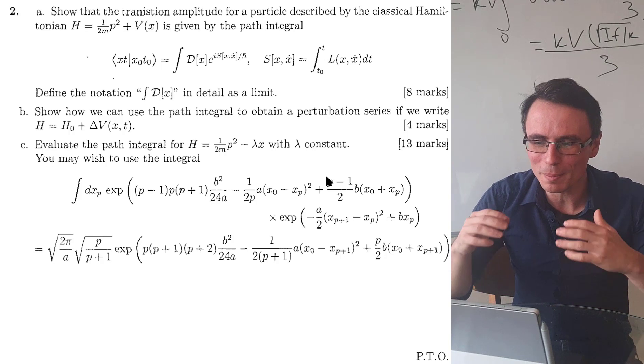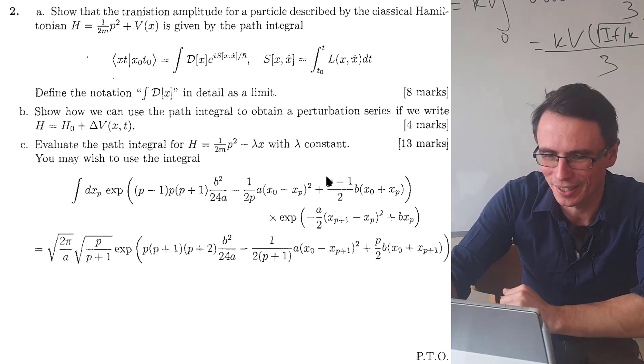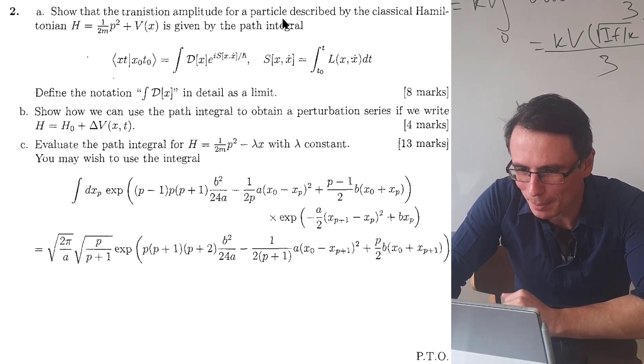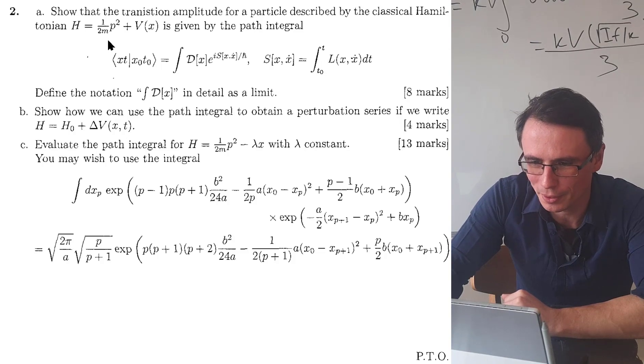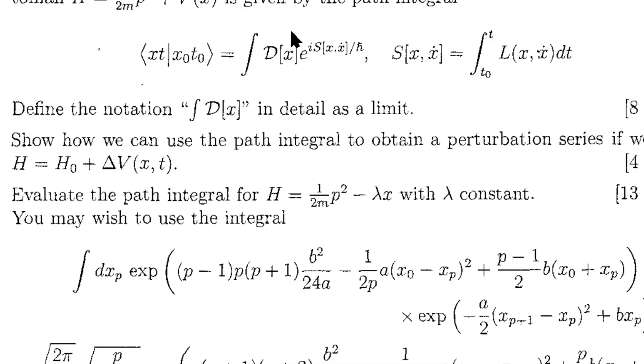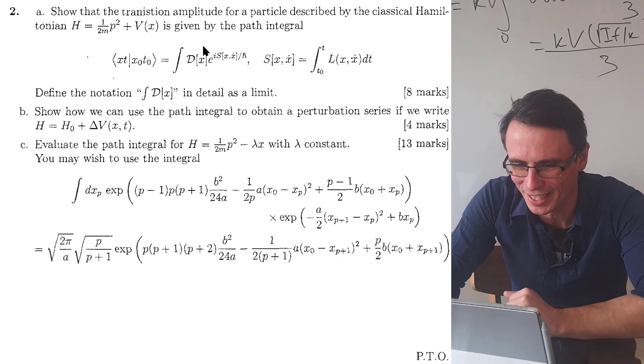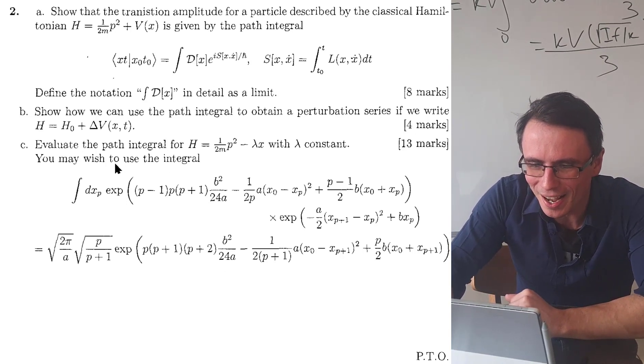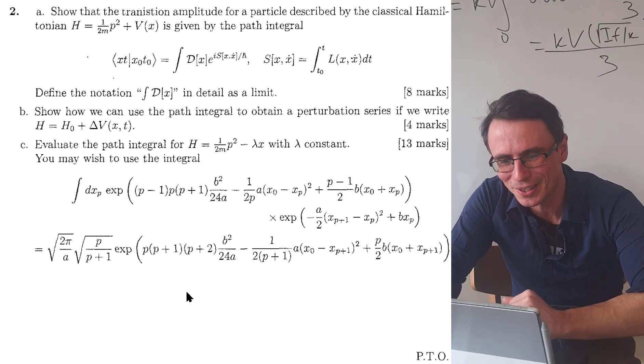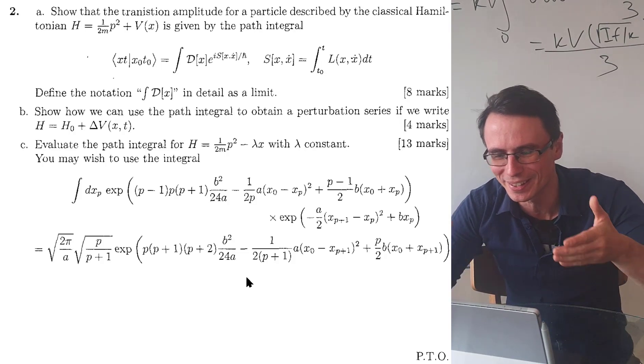Question two is all about path integration. Show the transition amplitude for a particle described by the classical Hamiltonian is given by the following path integral, which is one of those classic derivations. I really like how at the end of this question you may wish to use this integral. I'm so glad that this is given.